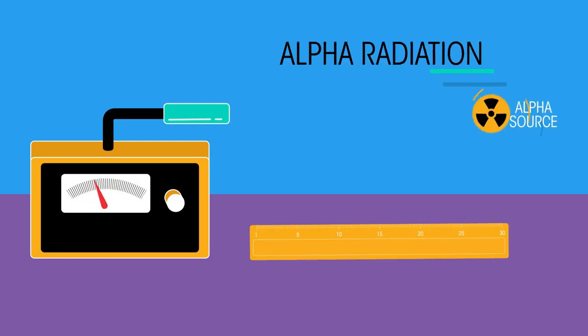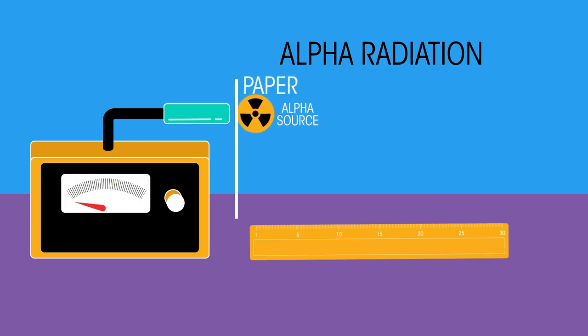Let us look at alpha radiation first. Addition of paper stops the alpha particles being detected. We can see that alpha particles have poor penetration in air and even thin paper can stop it dead.